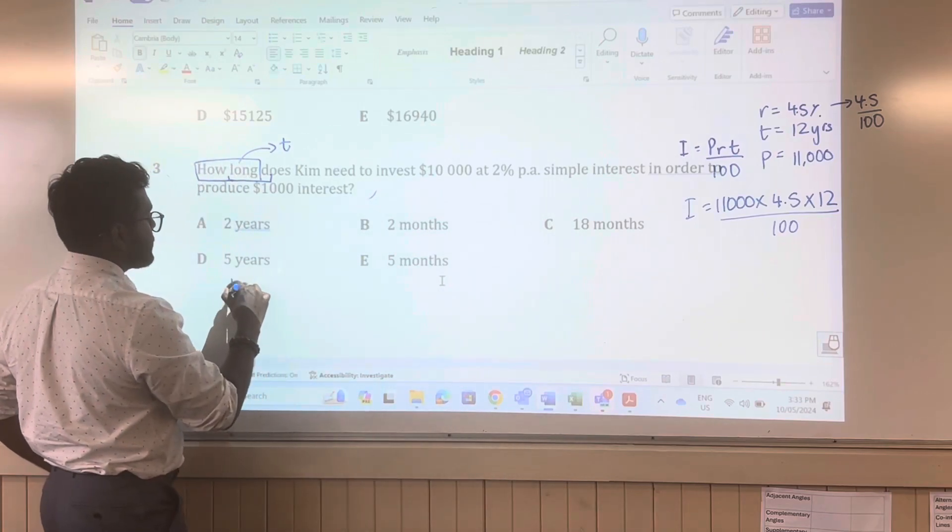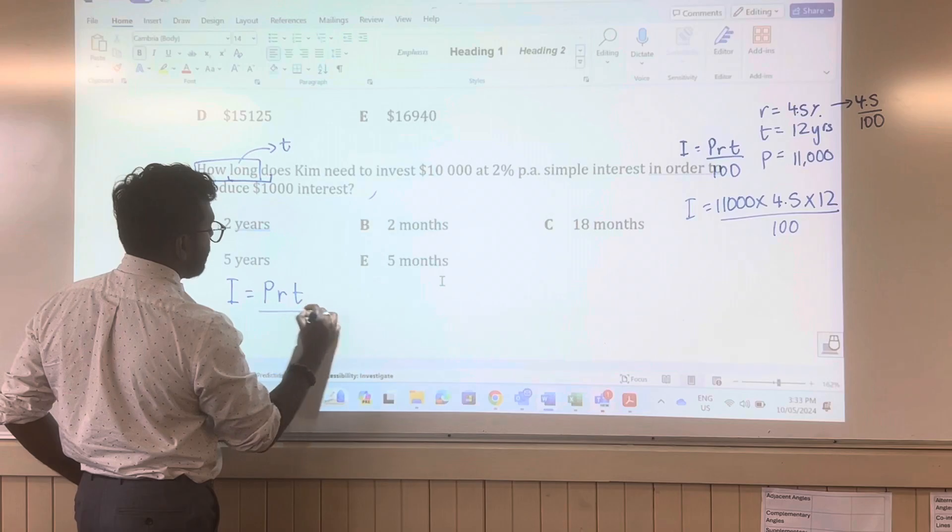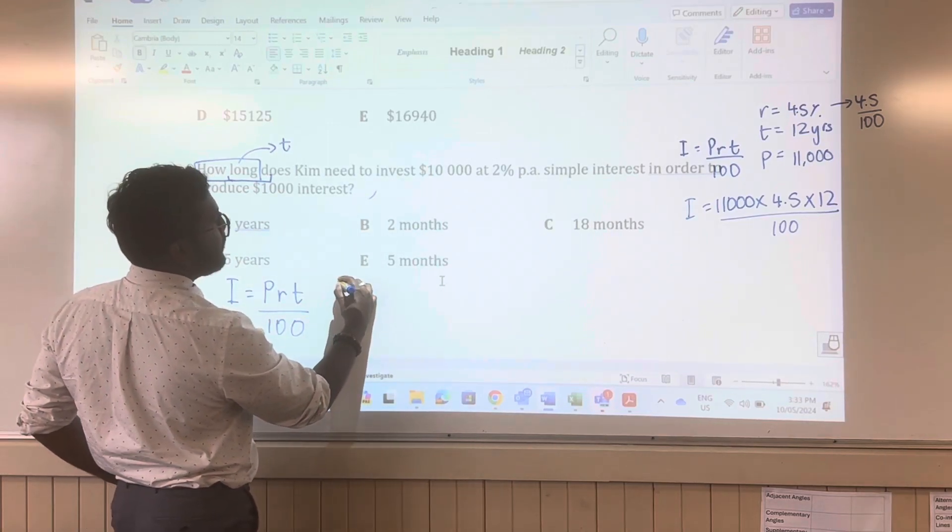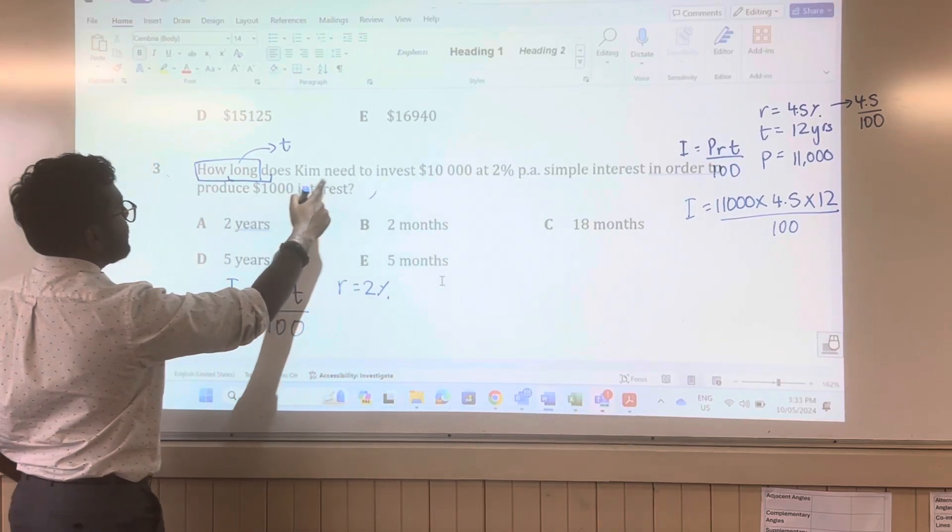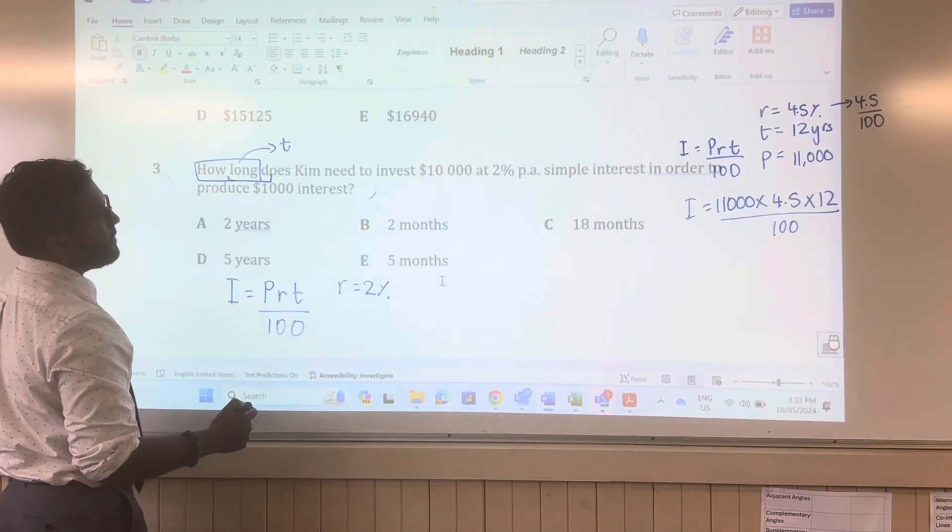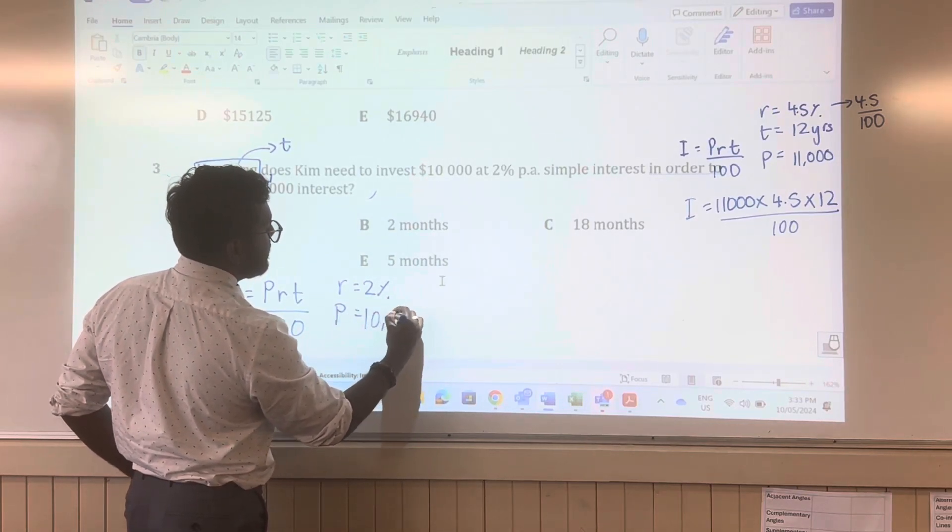So we're going to write down what we know. So we know in this formula I is equal to PRT over 100. What do we know? We know the rate is 2%. It says, how long does Kim need to invest $10,000? So principal is $10,000.